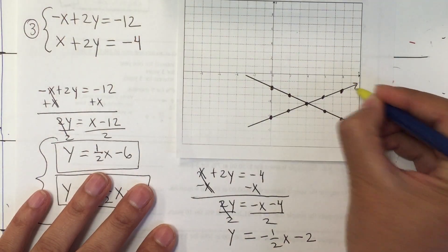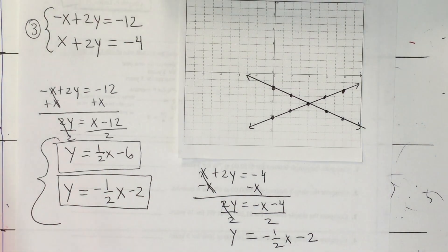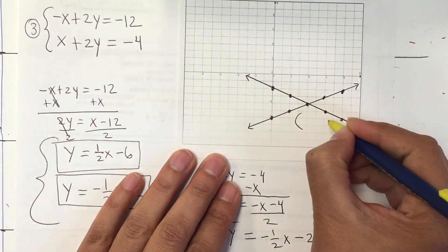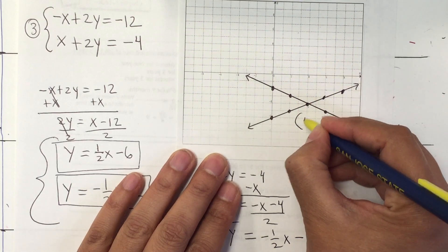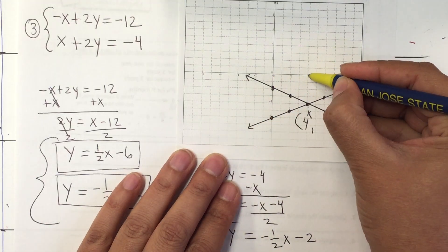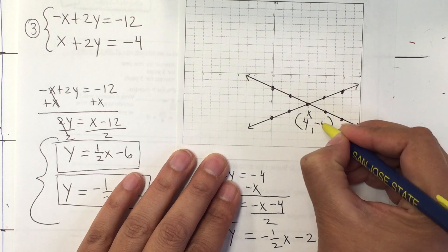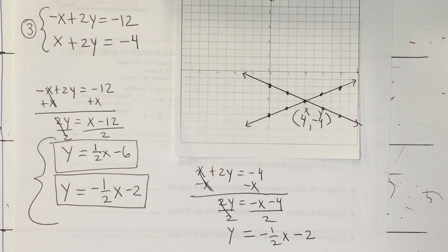You can put arrows on the lines to indicate they go on forever, but today what we're looking for is the solution — the place where they meet. So x = 4 and y = negative 4. That's it for today; I hope this video helps, and now you can work on 5.4.